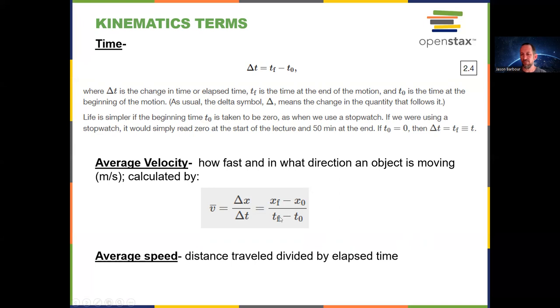Now, that being said, some of the definitions still have tf and t naught in them. So average velocity, you can see here, it's how fast an object's moving and in what direction. So scalar or vector? That's right, it's a vector. And it's calculated as displacement, which is delta x over time. Average speed, on the other hand, is distance traveled divided by elapsed time.